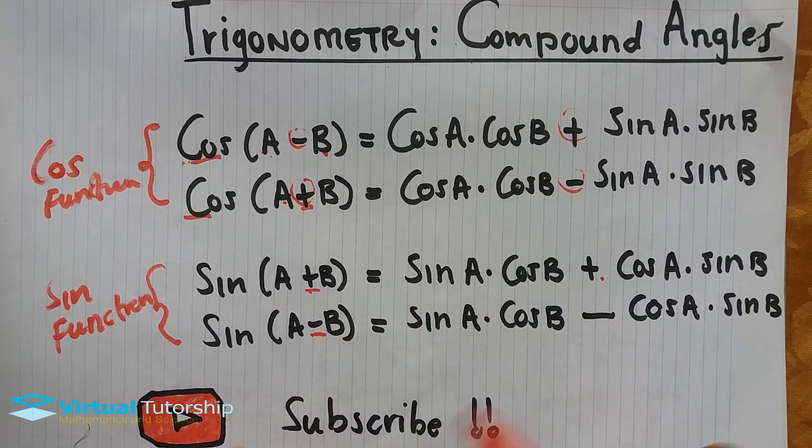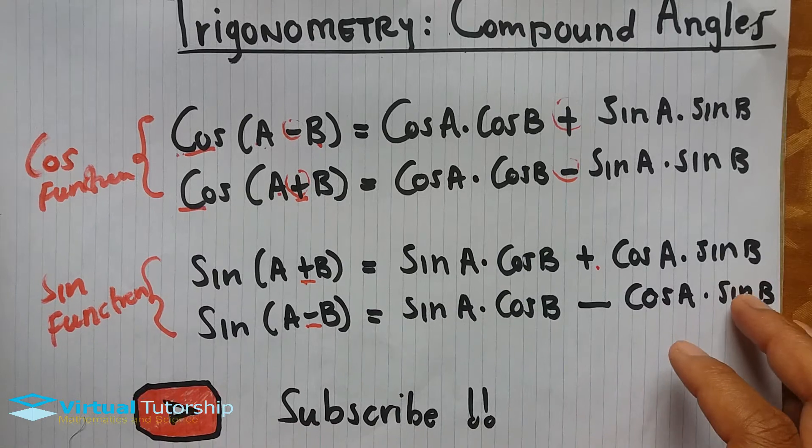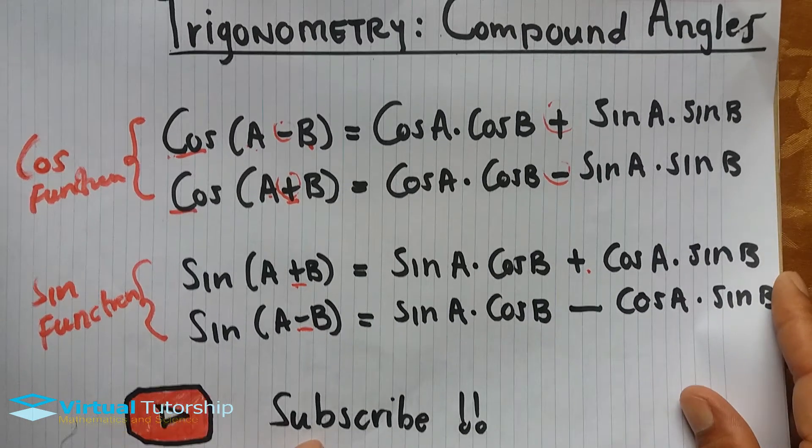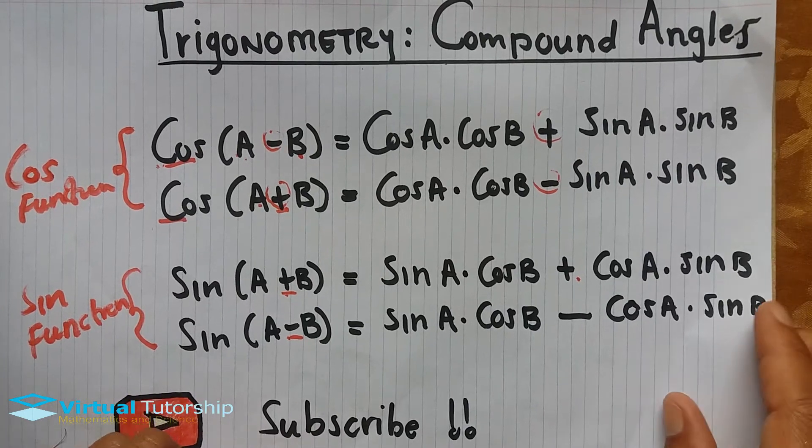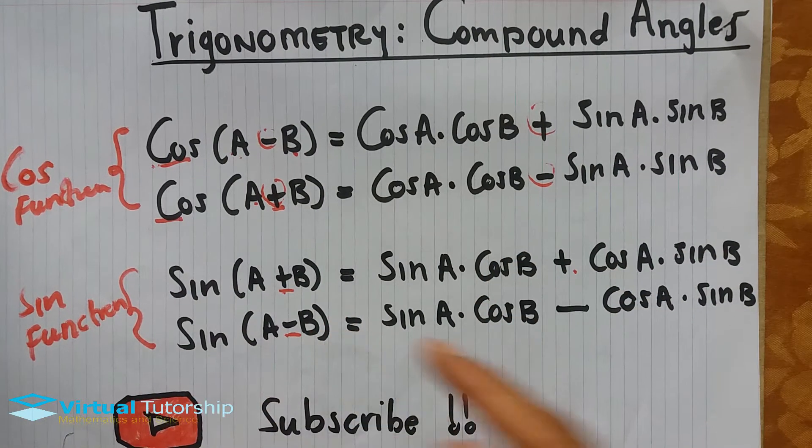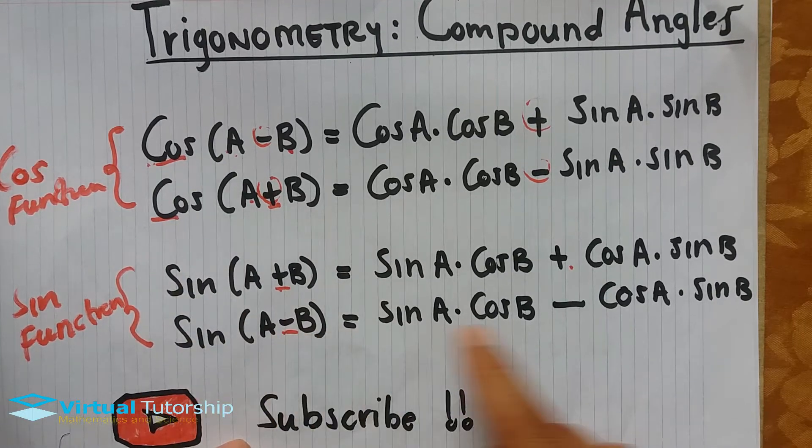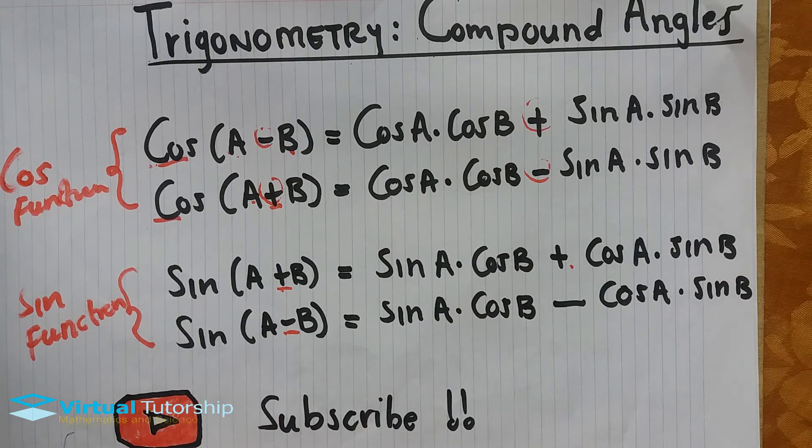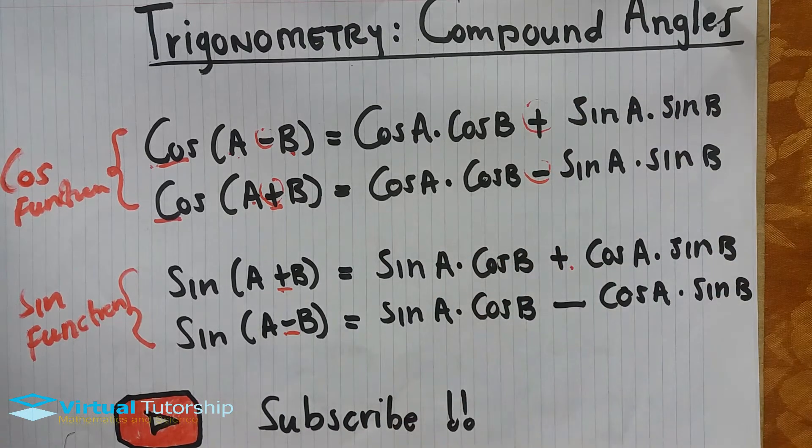The best way to memorize compound angles: for the sine function, the signs stay the same. For the cosine function, the signs change. You must know these formulas by heart in order to solve compound angle expressions.